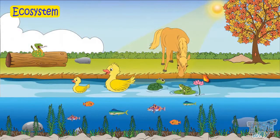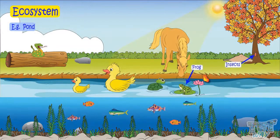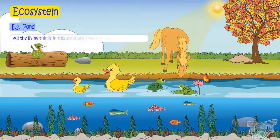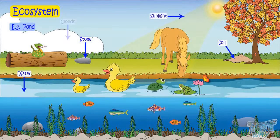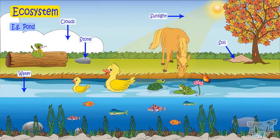Like in a pond, there are many living things like frogs, insects, fish, snails, and butterflies. All these living things in a pond are linked to the non-living things like stone, water, air, soil, sunlight, clouds, and rain. All living and non-living things are linked to each other and their environment through one or the other way.